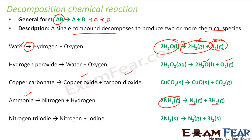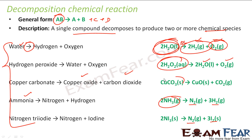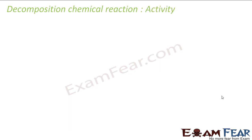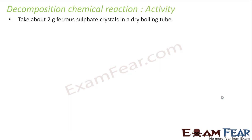You have ammonia which can be converted to nitrogen and hydrogen. Nitrogen triiodide can be converted into nitrogen and iodine. So these are chemical reactions where the common thing is you have one big compound that breaks into smaller species — these are examples of decomposition chemical reactions.